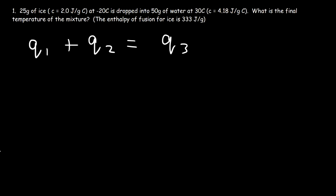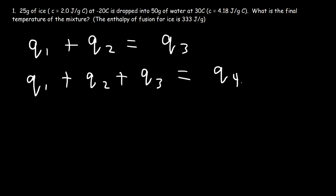Now if all of the ice melts, we need Q1 — the heat required to heat up ice from negative 20 to zero — Q2, the energy to melt all of the ice, and now we have liquid water, so we've got to raise the temperature of the cold water sample. Q4 would be the energy released when the hot water sample releases energy. As you can see, based on where the final temperature is located, we could have a different equation, and that's why we can't know which equation to use right now.